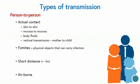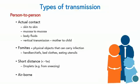Infections can also transmit via fomites. These are physical objects that can carry infection, often getting infected through body fluids. They may be things such as handkerchiefs, bedclothes, or eating utensils. Infections can also transmit short distances through droplets, and this is different from airborne infections where you get an aerosol and infections can travel much larger distances, as seen for example with measles or tuberculosis.